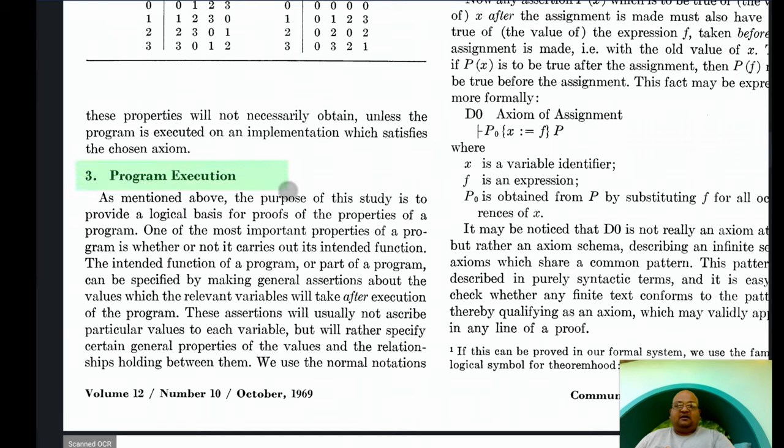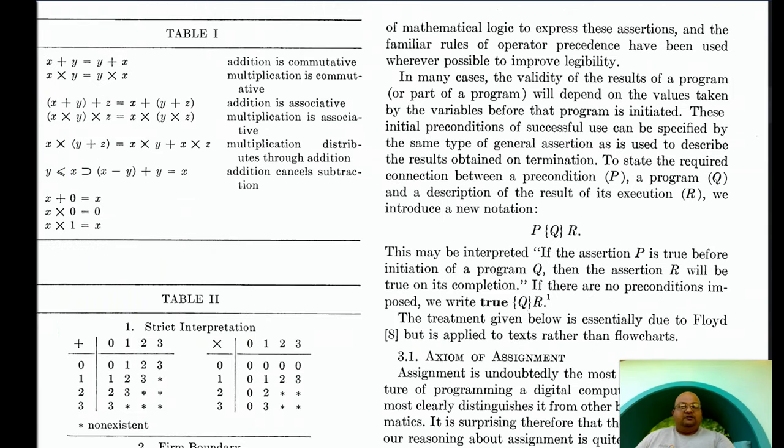After that quick aside on computer arithmetic, we jump into the guts of the paper, which is how to reason about program execution. In wanting to prove a program correct, what we're really after is making statements about the values of variables after the execution of a program. And we don't want to say that a variable has a specific value, but we want to specify the properties that those variable values will satisfy, and the relationships among the variables. And to do that, Hoare introduces this notation, which later went on to be referred as a Hoare triple.